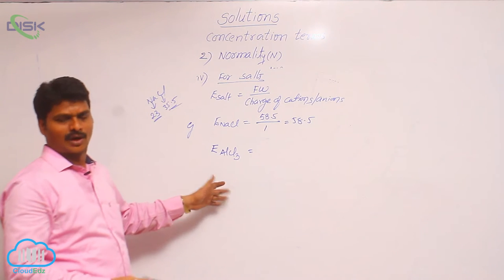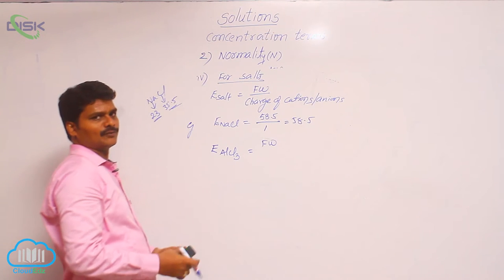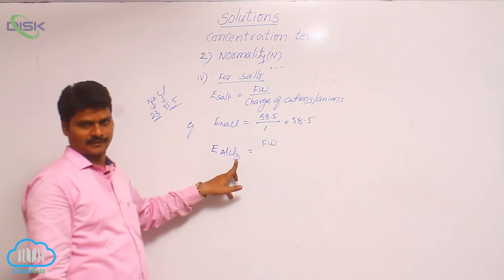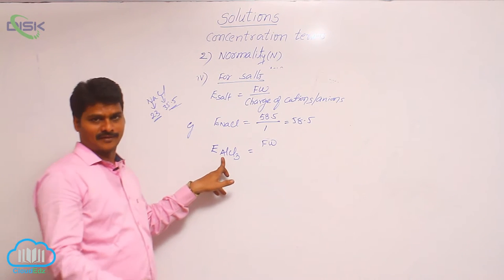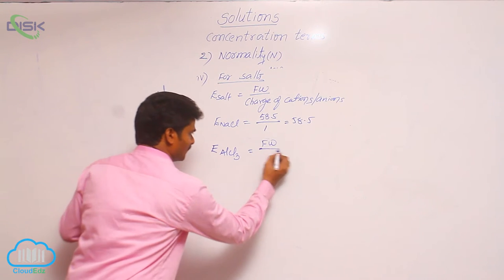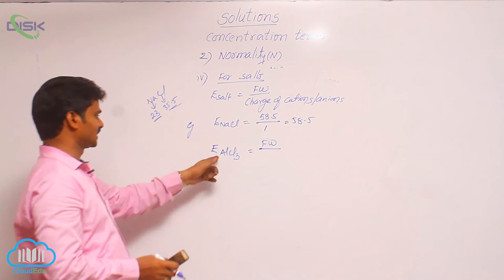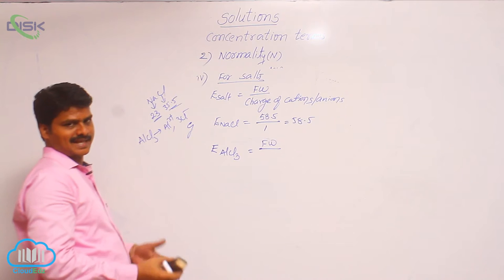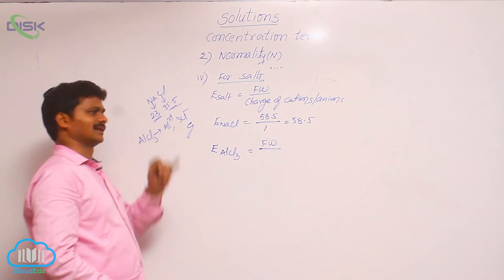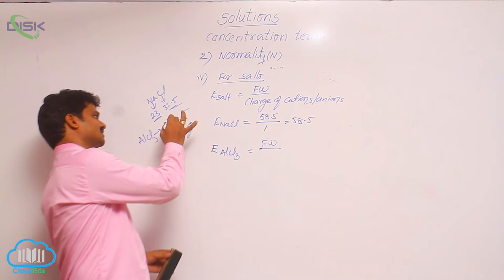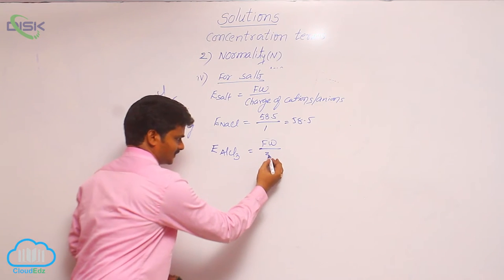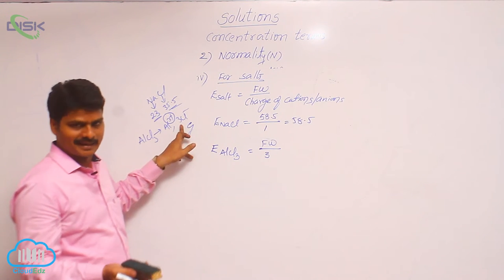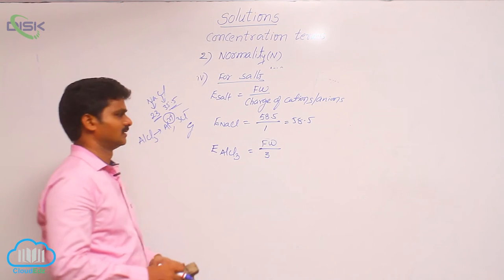For AlCl3: formula weight = aluminium (27) + 3 × chlorine (35.5). AlCl3 ionizes to Al³⁺ and 3Cl⁻. The charge of the cation is 3+, and the total charge of anions is 3−; taking magnitude, n-factor = 3. So equivalent weight of AlCl3 = formula weight divided by 3.